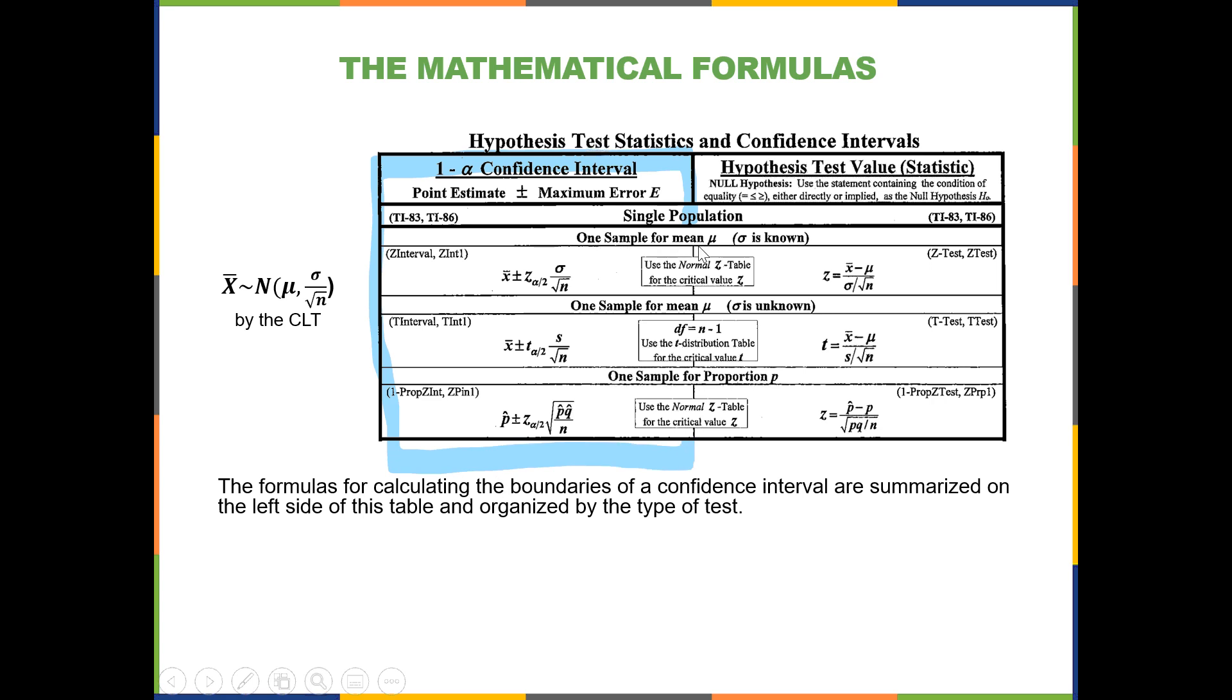So on the left side, we have our confidence intervals arranged according to what type of test or what type of interval we're doing. So if we have one sample to work with and we're estimating a population mean with sigma known, then we'd be using this formula here to calculate your confidence interval boundaries. And if you were doing a hypothesis test, this would be the test statistic formula.